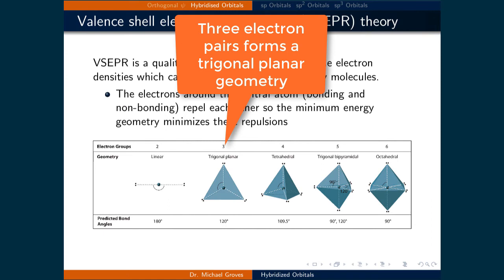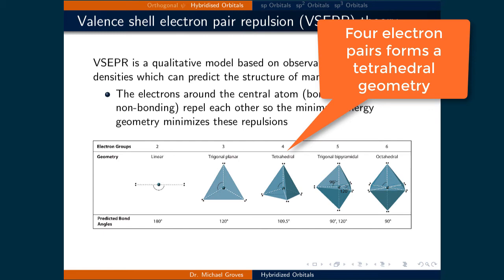With three lone pairs, the electrons arrange themselves in a planar geometry where the angle between each pair is 120 degrees. And with four pairs of electrons, the electrons arrange themselves in a tetrahedral orientation.